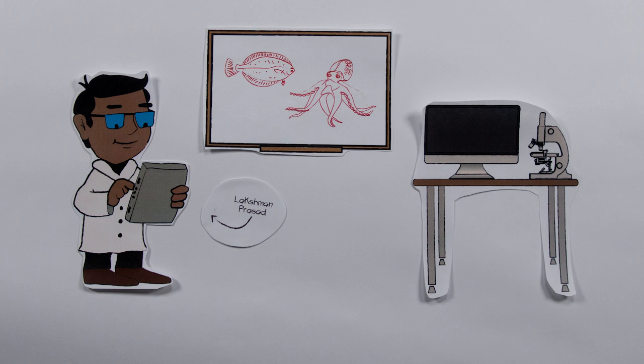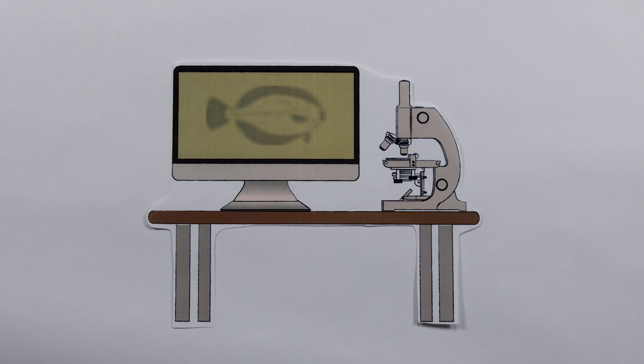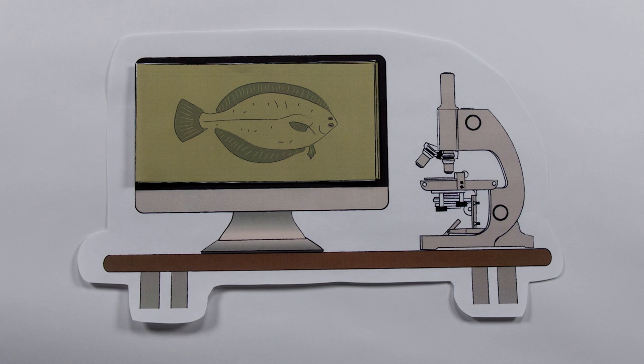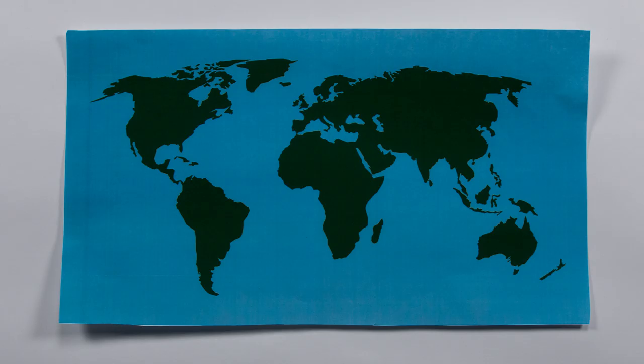In fact, flounders are so good at disguising themselves that Lakshman Prasad, a scientist at Los Alamos National Laboratory, is now studying these and other sea creatures to develop computer-based methods to better spot things that are doing everything they can not to be spotted.